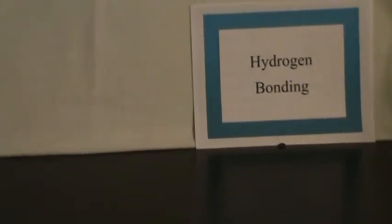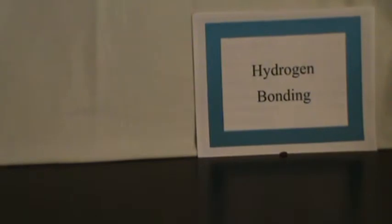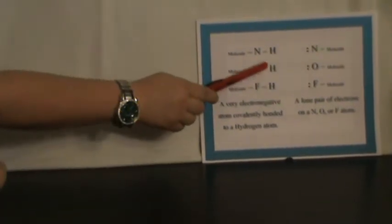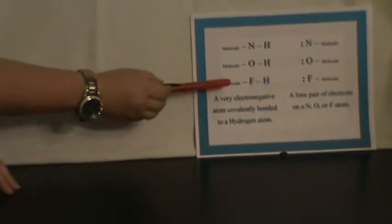The second type is hydrogen bonding. Hydrogen bonds are a particularly strong intermolecular force. To have a hydrogen bond, you must have on one side a hydrogen covalently bonded to a very electronegative atom: nitrogen, oxygen, or fluorine. On the other side, there must be a lone pair of electrons on another very electronegative atom: nitrogen, oxygen, or fluorine.